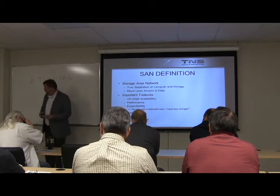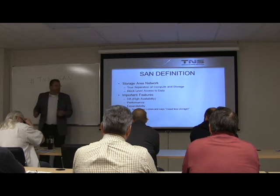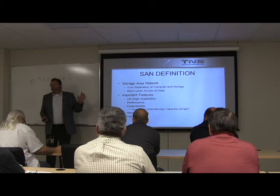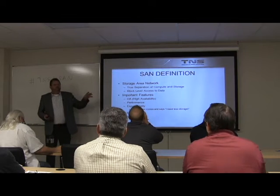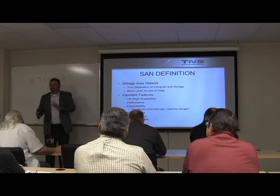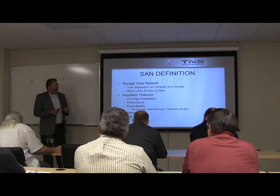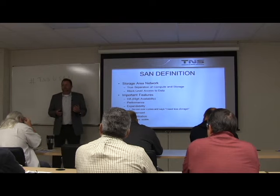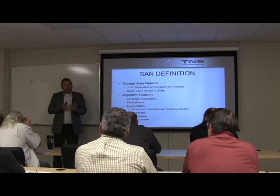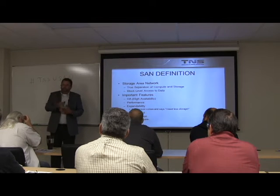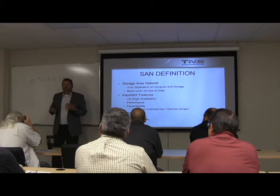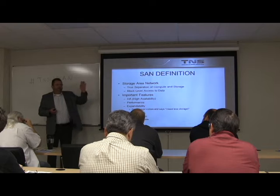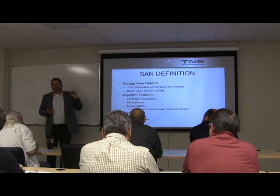Let's start with the basics. What's the definition of a SAN? It's really truly separating storage from compute — your CPU and memory are in one place and your storage is in another. A key feature of a SAN is block-level access, meaning to the operating system it looks like it's writing right to disk, versus file-level access like a file share where you're writing at a file level instead of block level.